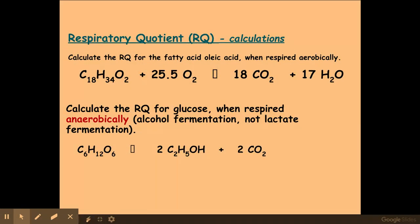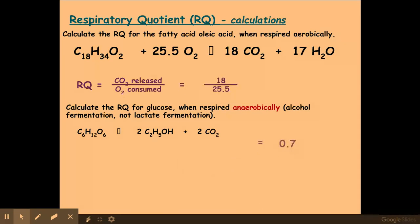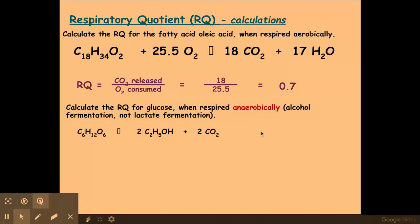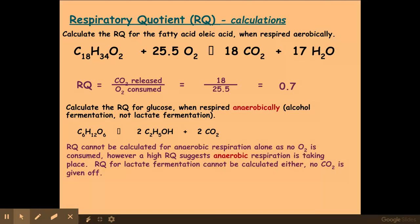Here are some other examples which you can pause the video and have a go at. It's not exactly volumes but it gives you the idea of what you need to be doing in this kind of question. If you got 0.7, as you can see, this is a fatty acid — this is the RQ value for a lipid. For the last example, you cannot calculate the RQ value because there is no oxygen consumed, meaning anaerobic respiration is taking place, so an RQ value cannot be calculated.